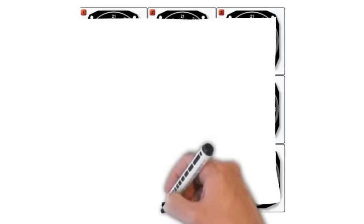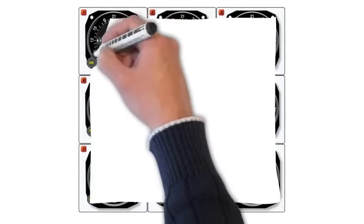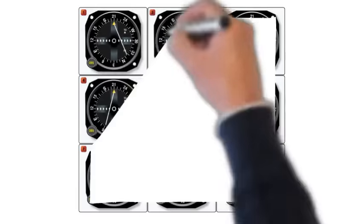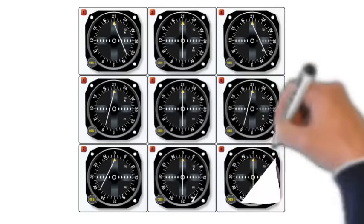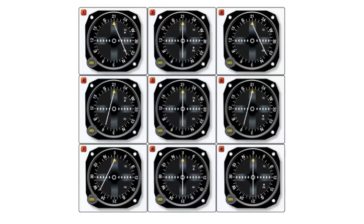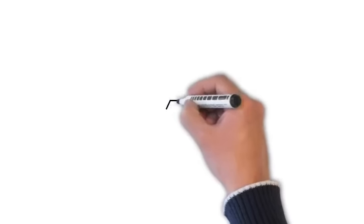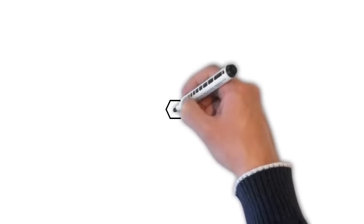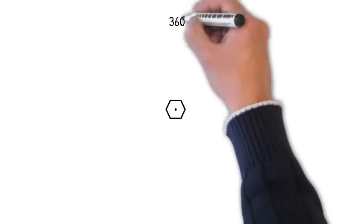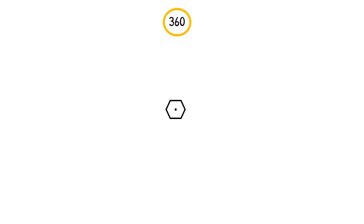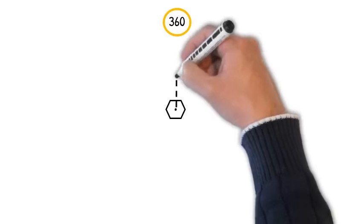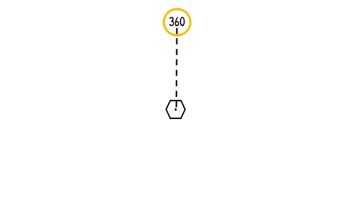This next illustration is a picture taken directly from the FAA computer testing supplement, which is available online. At the end of this video I'll give you a link so you can go to the website and download this booklet. This depiction shows nine different CDIs which demonstrate various aircraft positions in relation to the VOR transmitter located on the ground. We're going to draw our VOR again, and for simplicity we're just going to use a 360 radial — I circled 360 because that's what we're going to select in our OBS when navigating to this radial. Remember, the radial begins at the VOR and extends to infinity to the north.